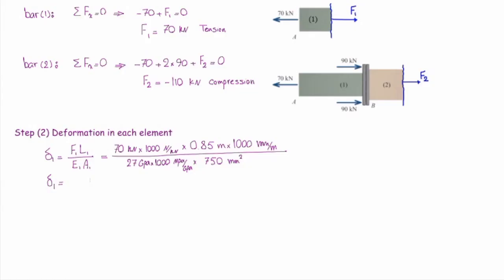If I work with appropriate unit, the final answer in deformation would be in millimeter. And in this case, the value is 2.938 millimeter. Similarly, I'm going to determine the deformation in element number two, which is F₂L₂ over E₂A₂.